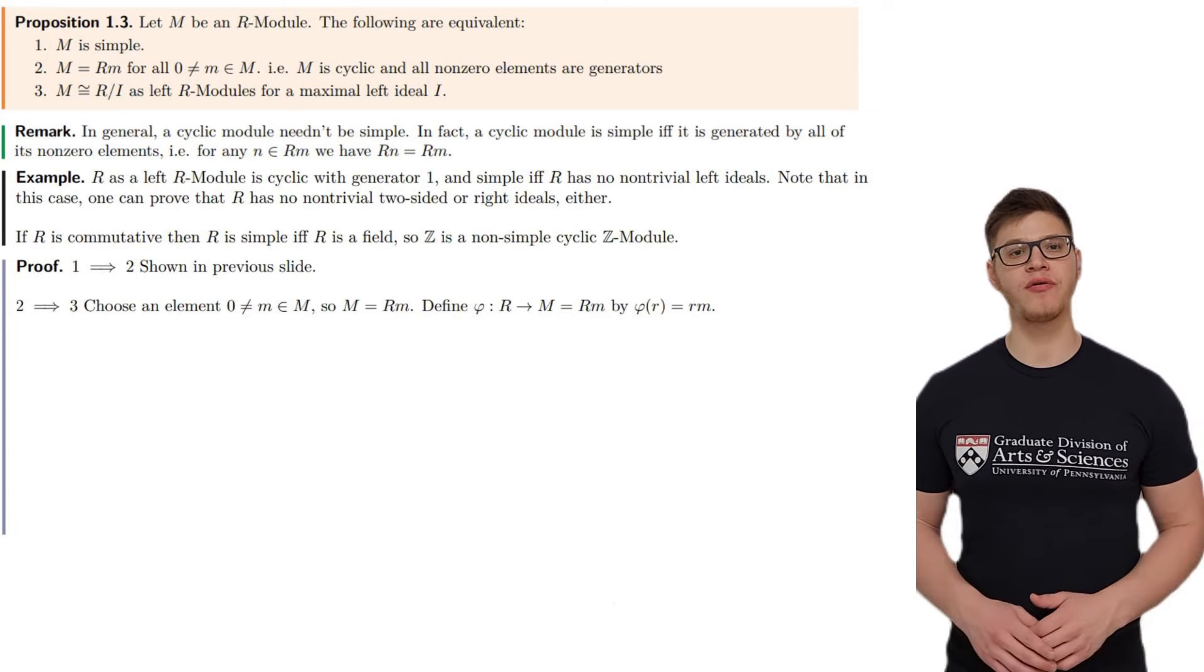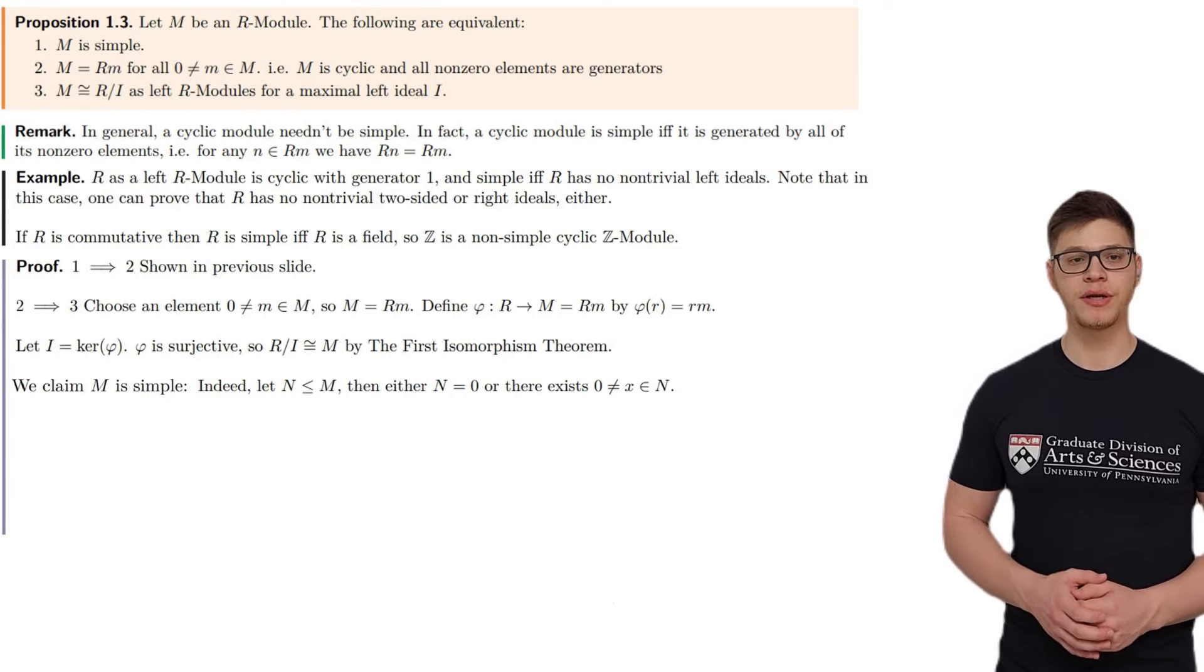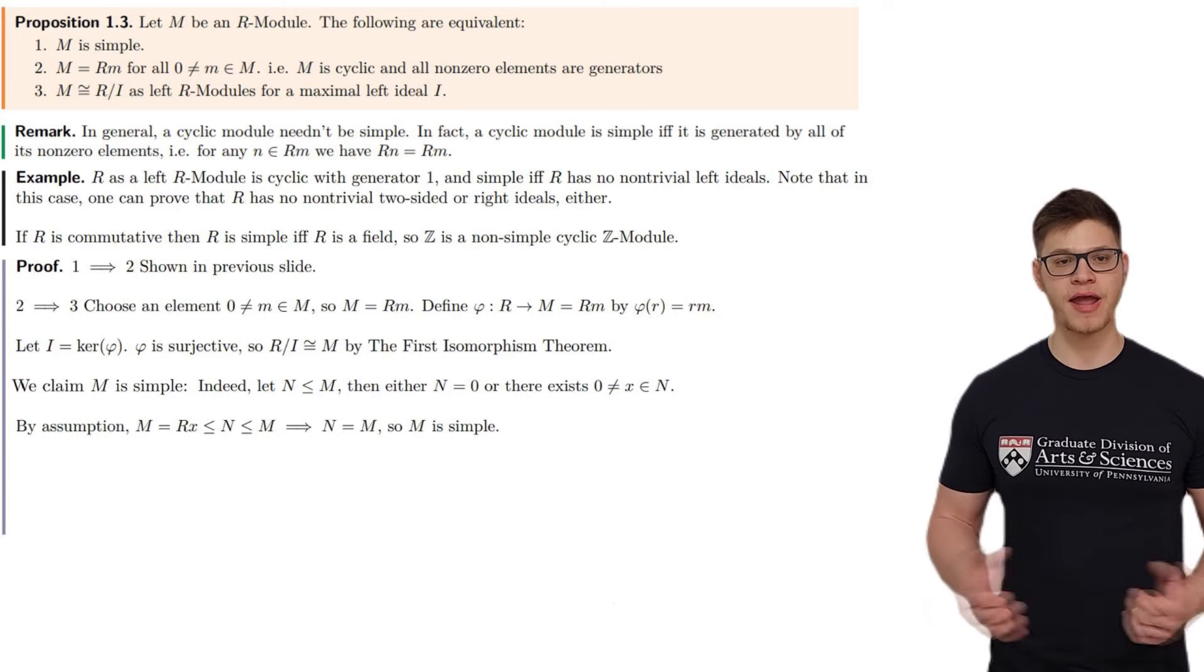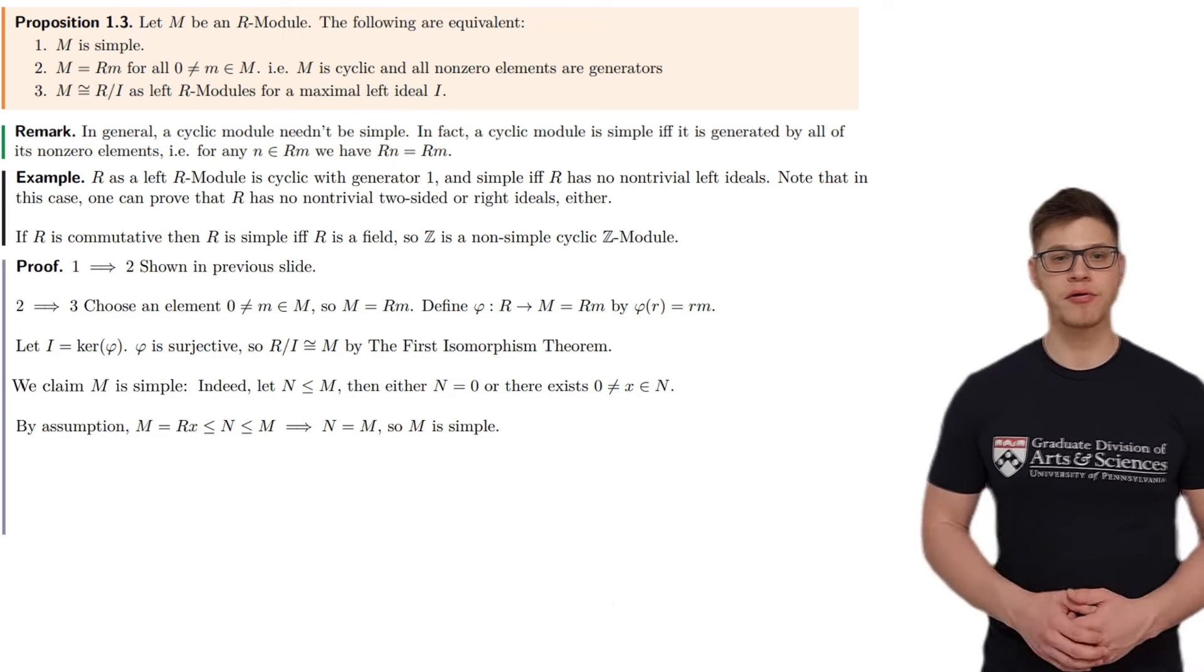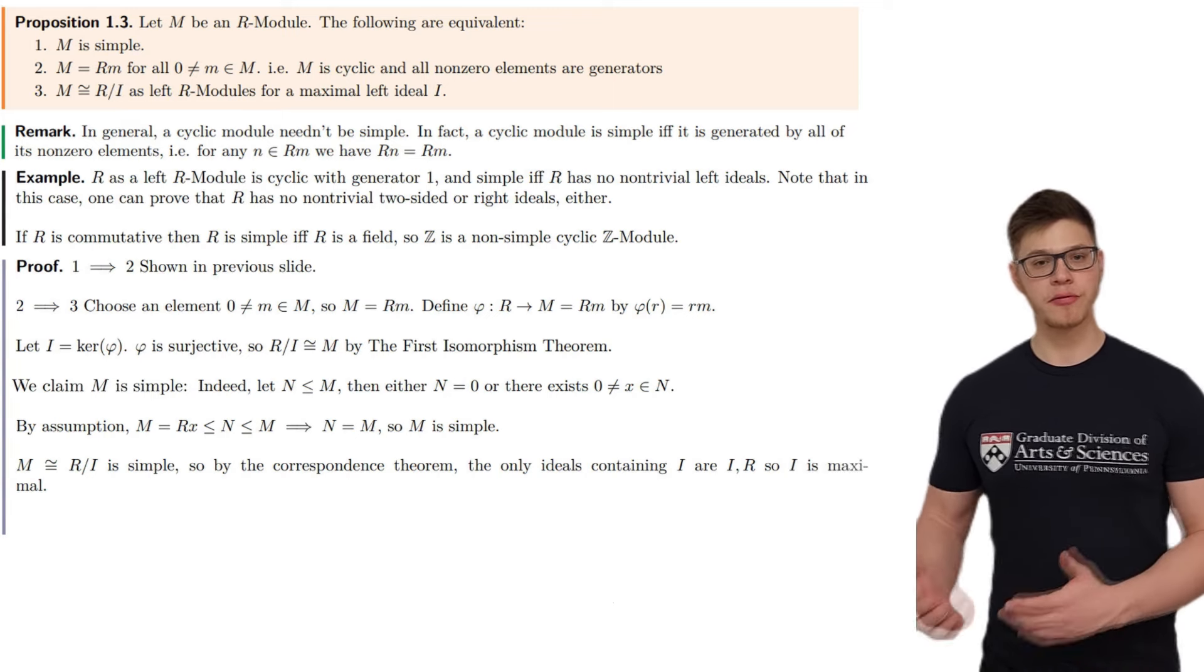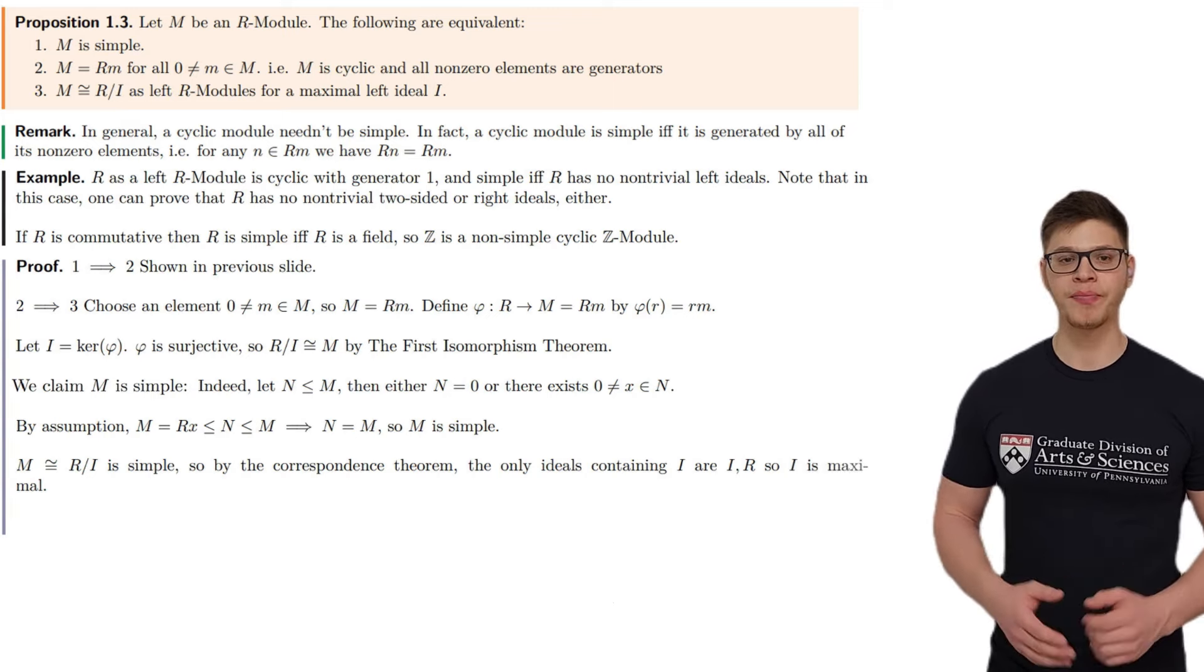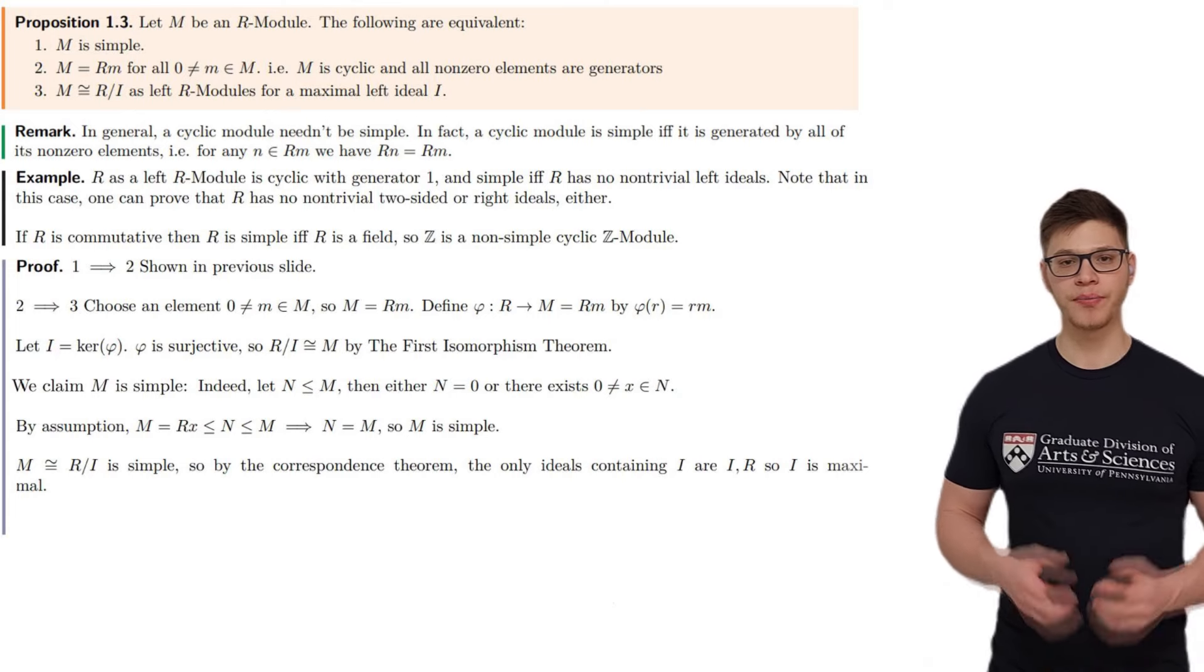So R mod I is isomorphic to our module by the first isomorphism theorem. We claim that our module M is simple. Indeed, let N be a sub-module. Then either N equals 0, or there is a non-zero element x inside of N. But then, by assumption, the sub-module generated by x is equal to the entire module. But this means that M is contained in N. Hence, N is equal to the entire module M. So M is simple. Since M is simple and isomorphic to R mod I, R mod I is also simple. So by the correspondence theorem again, the only left ideals containing I are I itself and the entire ring R. So I is a maximal left ideal.